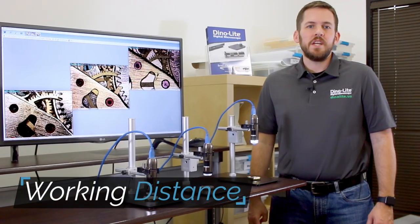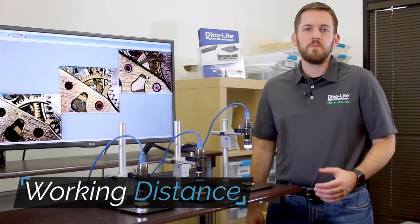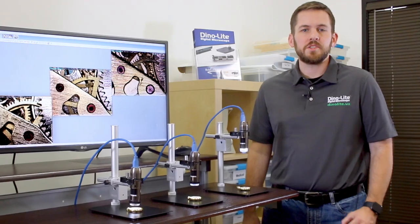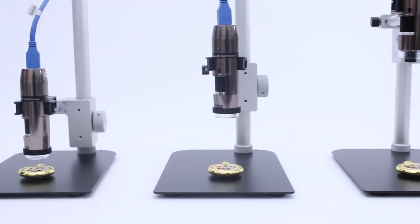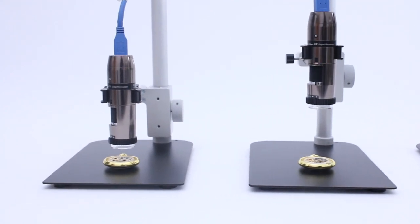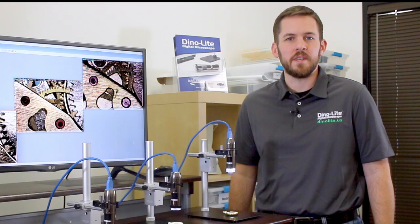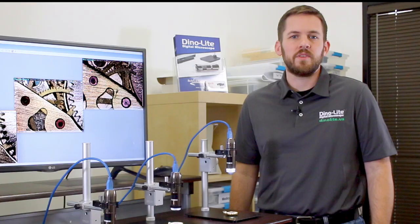Dynolite knows that some applications require a microscope with a different focal length than our standard design. These options help overcome challenges which require the microscope to be positioned further away from the specimen without giving up magnification.